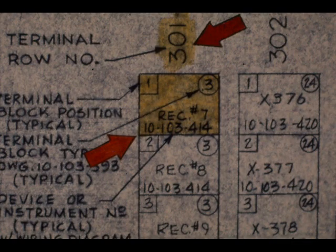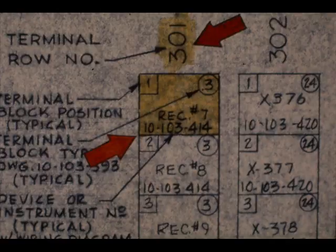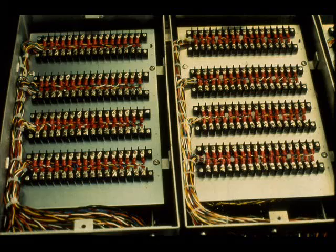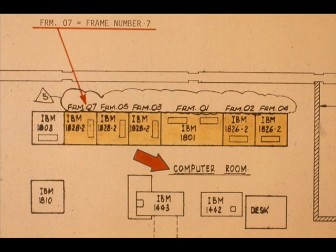Also locate TB301-1. This is TB301-1. The computer items consist of frames. Frame is actually another name for terminal cabinet. This drawing shows the computer frame location and numbering.